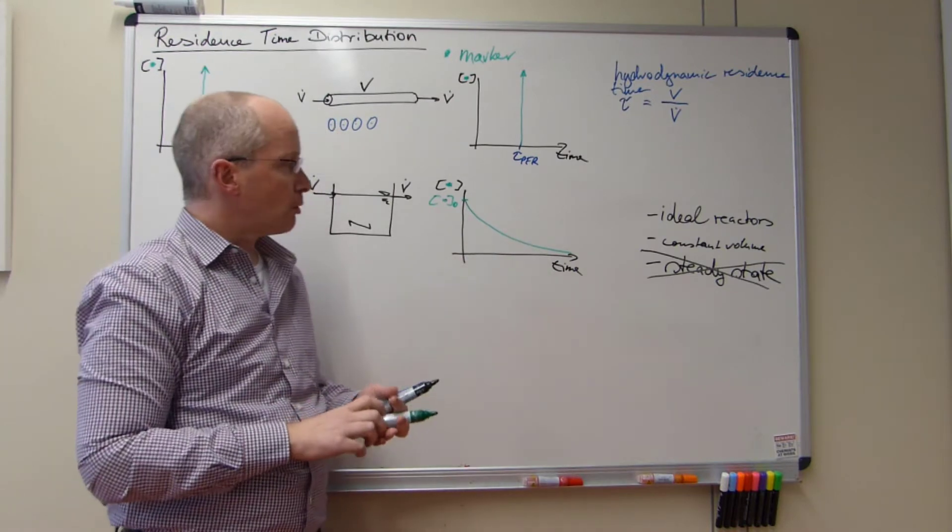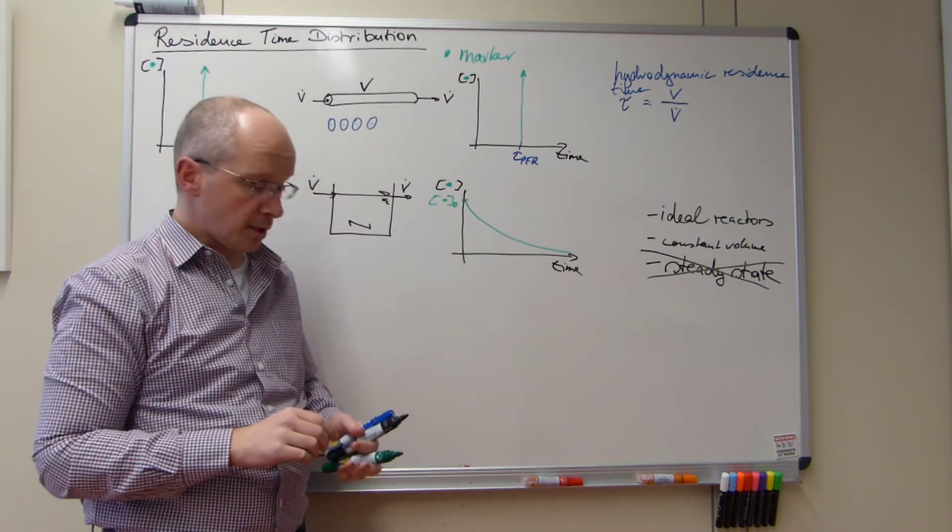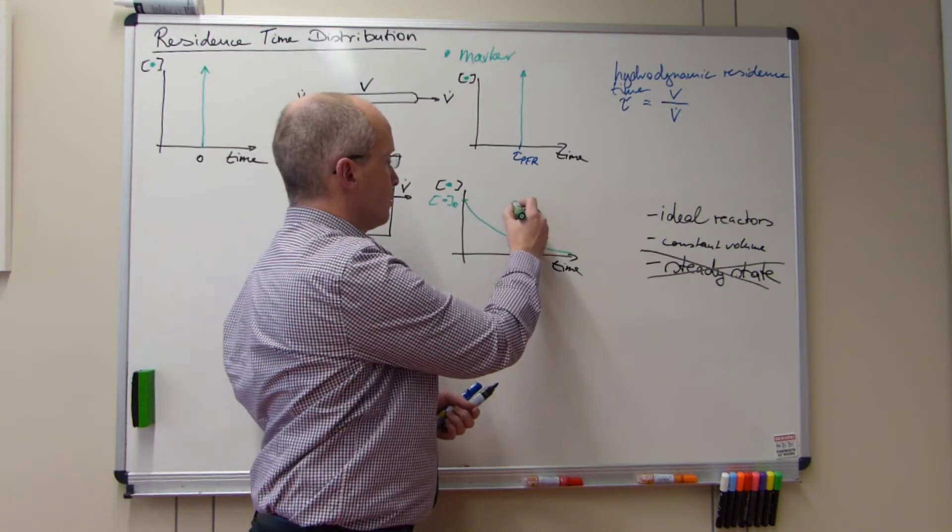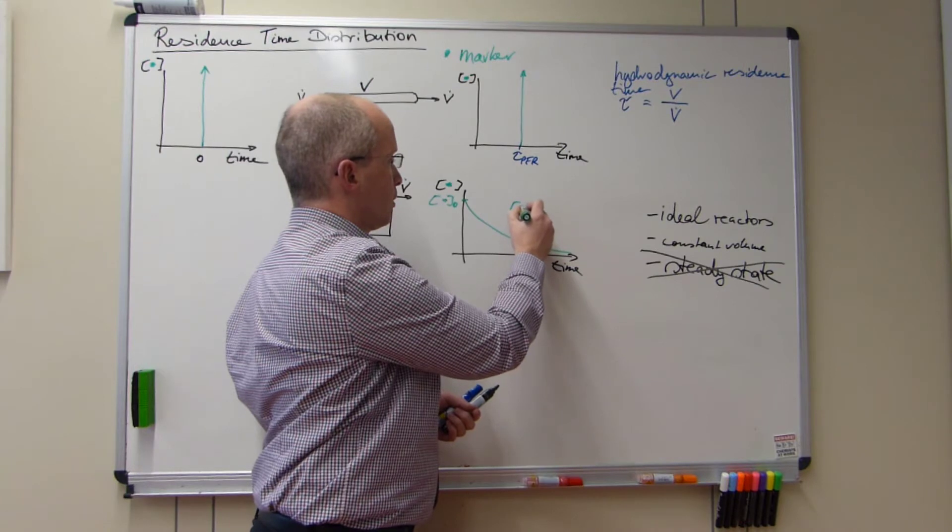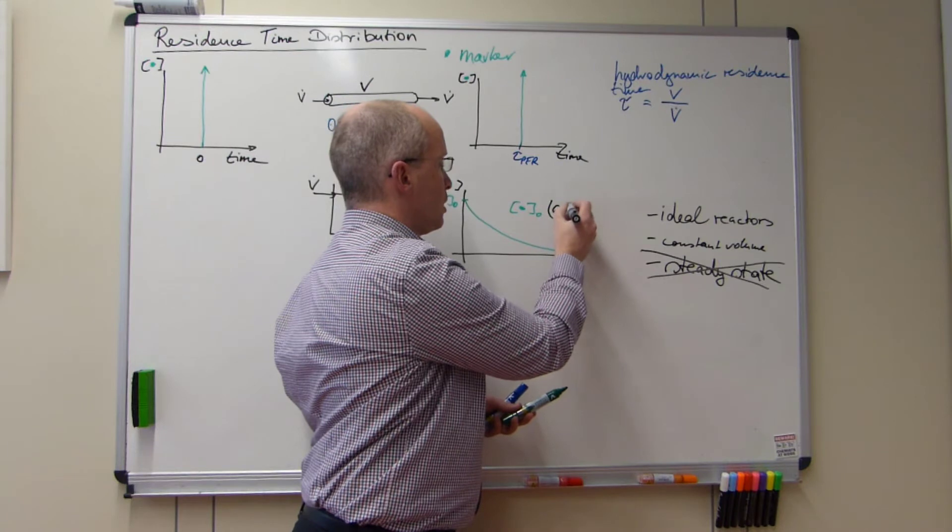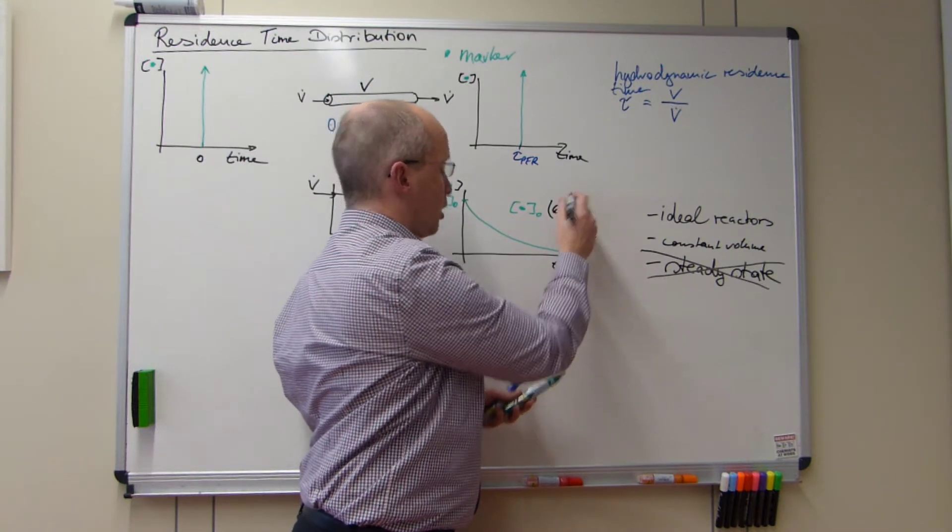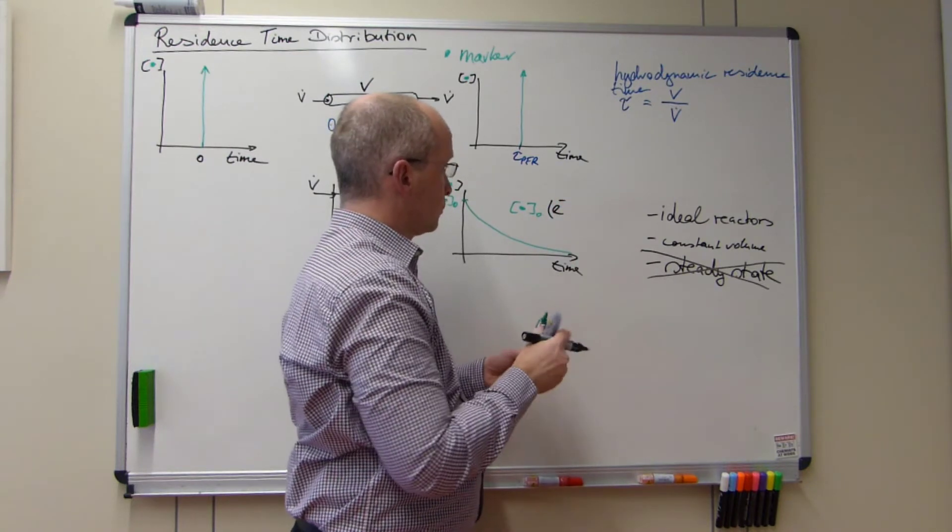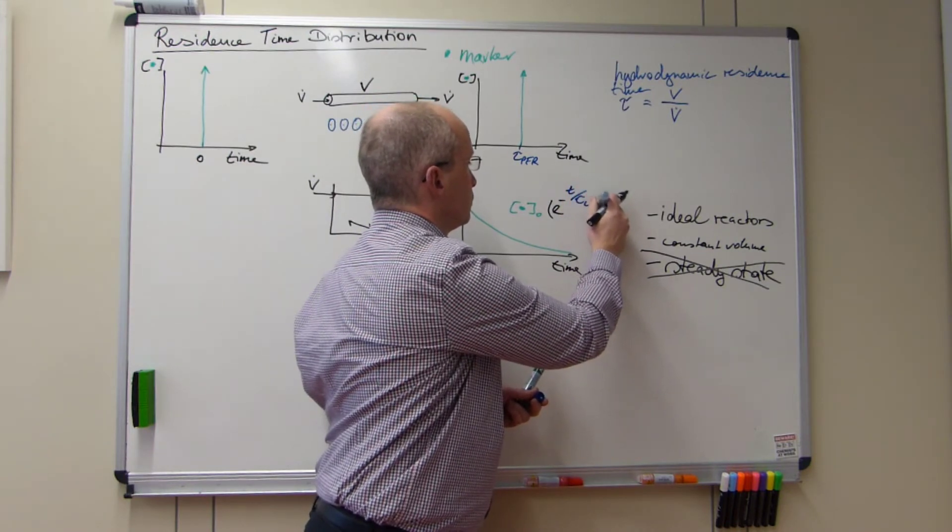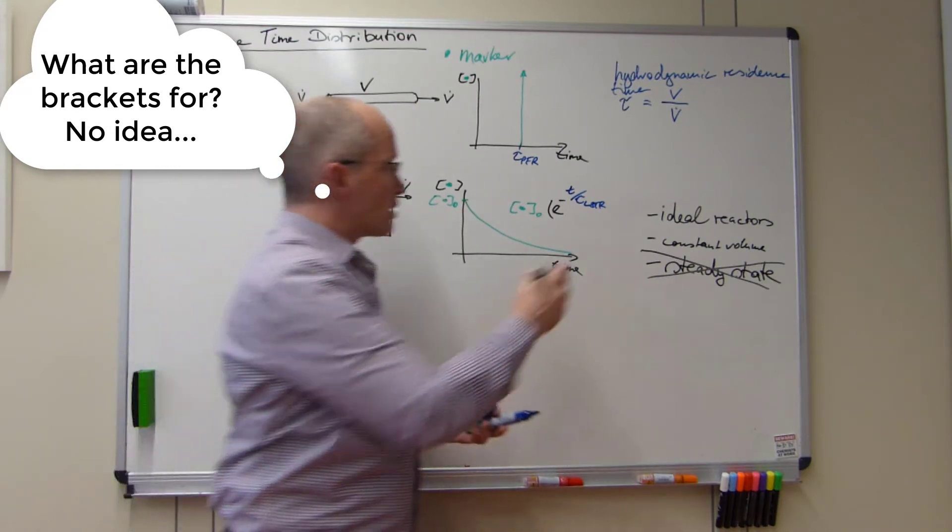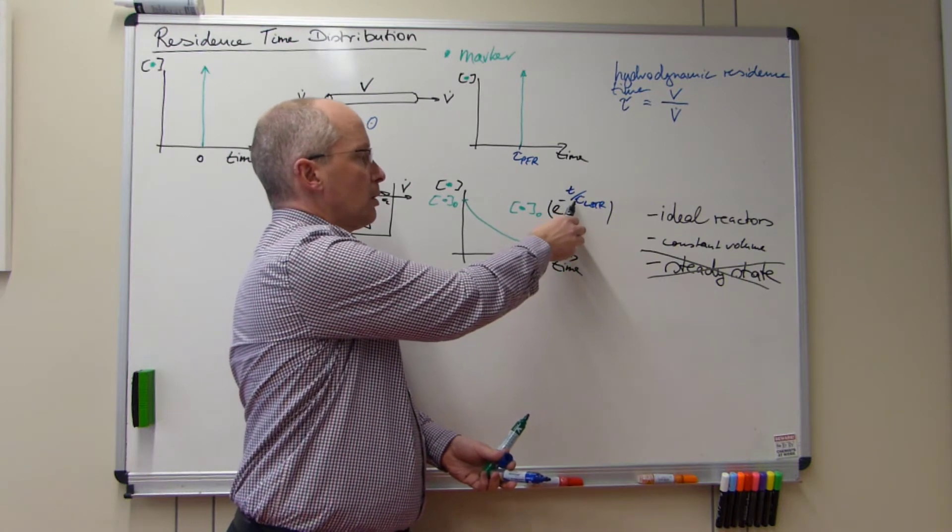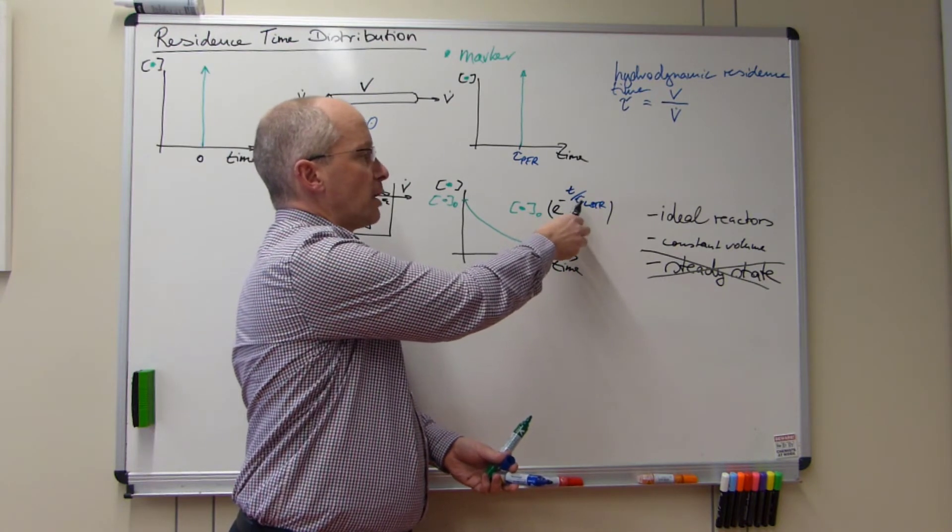This will decline over time. Where do we find our residence time again? So that it would be that we find this concentration as a function of e to the power of our residence time. So that is what we will find here. So we have an exponential decay.